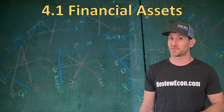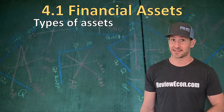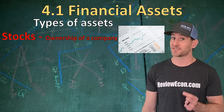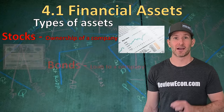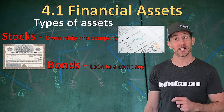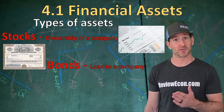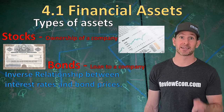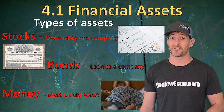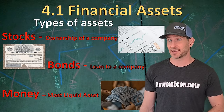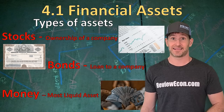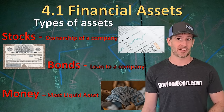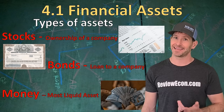Since this unit is all about financial markets, we're going to start off by talking about some financial assets. The first asset we'll discuss is stocks. Stocks are certificates of ownership for a corporation. Bonds, on the other hand, are a certificate that gives the owner the right to be paid back for a loan to a business or the government. There is an inverse relationship between the price of bonds and the interest rate. Money is another financial asset that is the most liquid, or most easily spent, of all assets. It's that money asset that this unit focuses on.